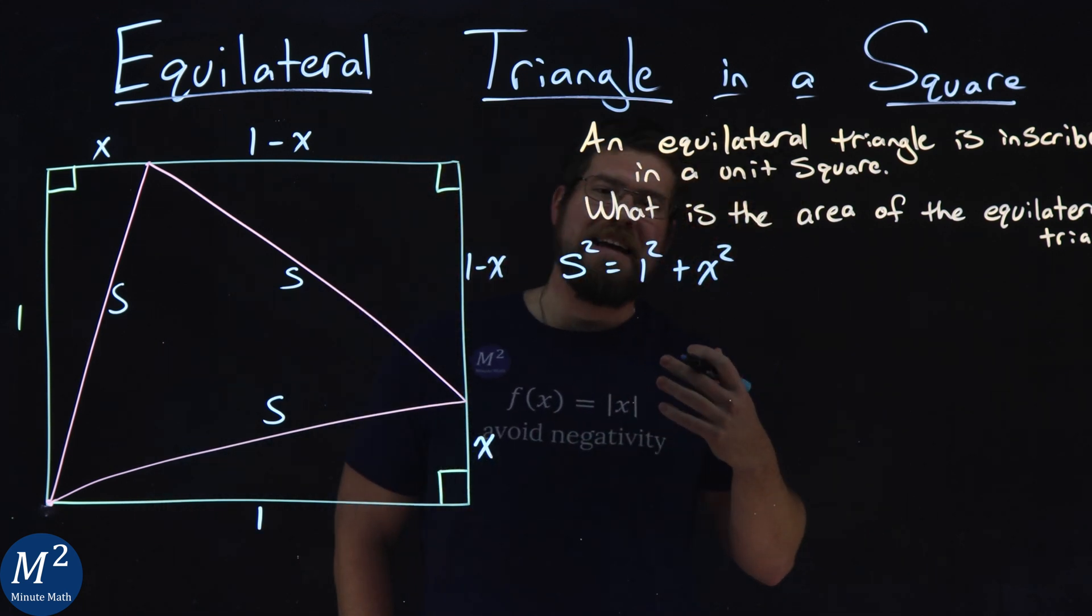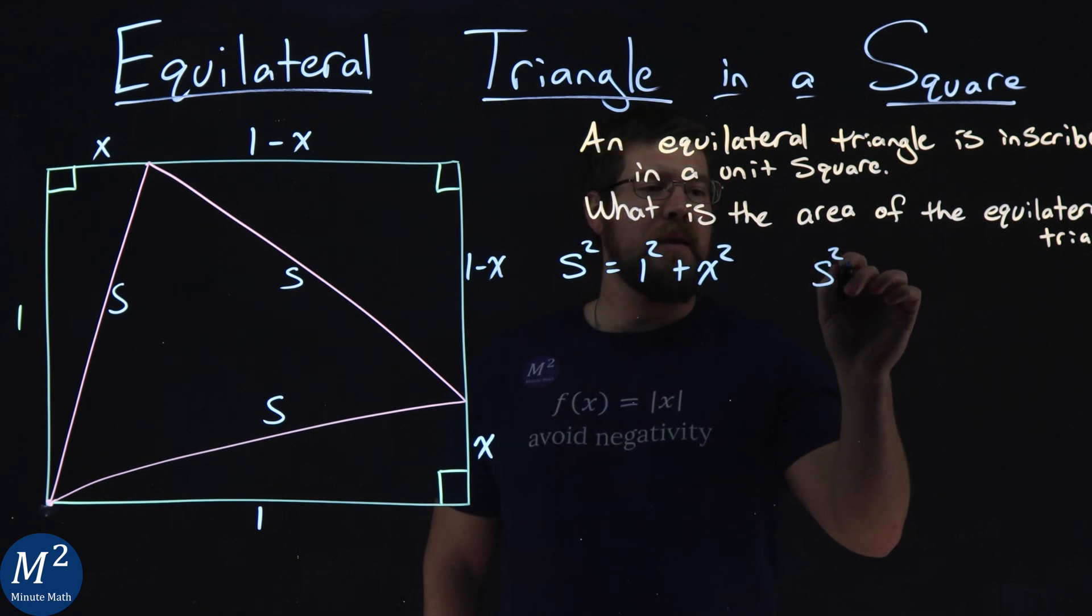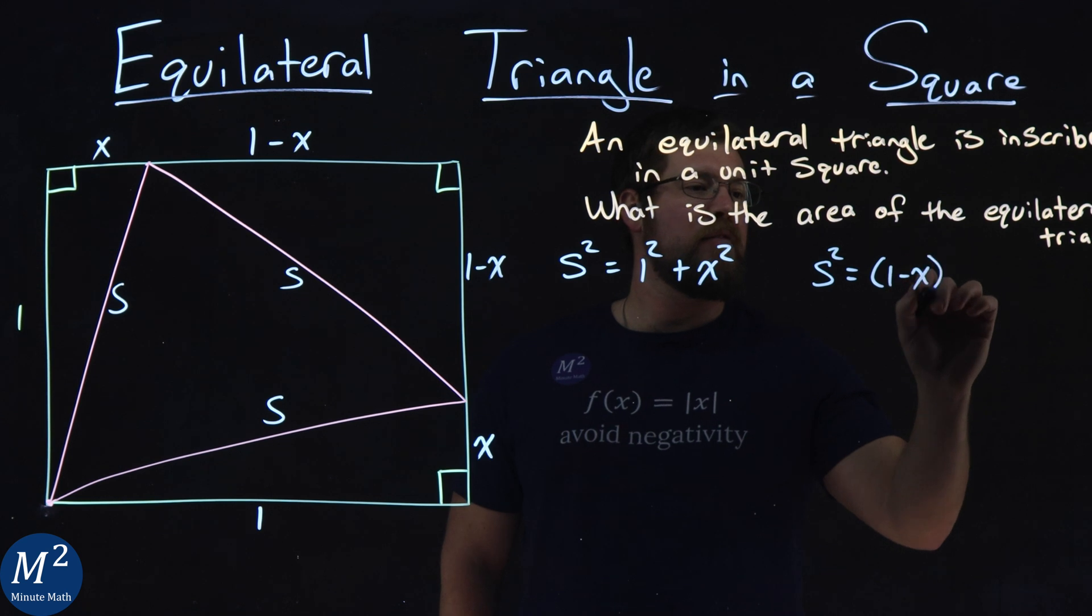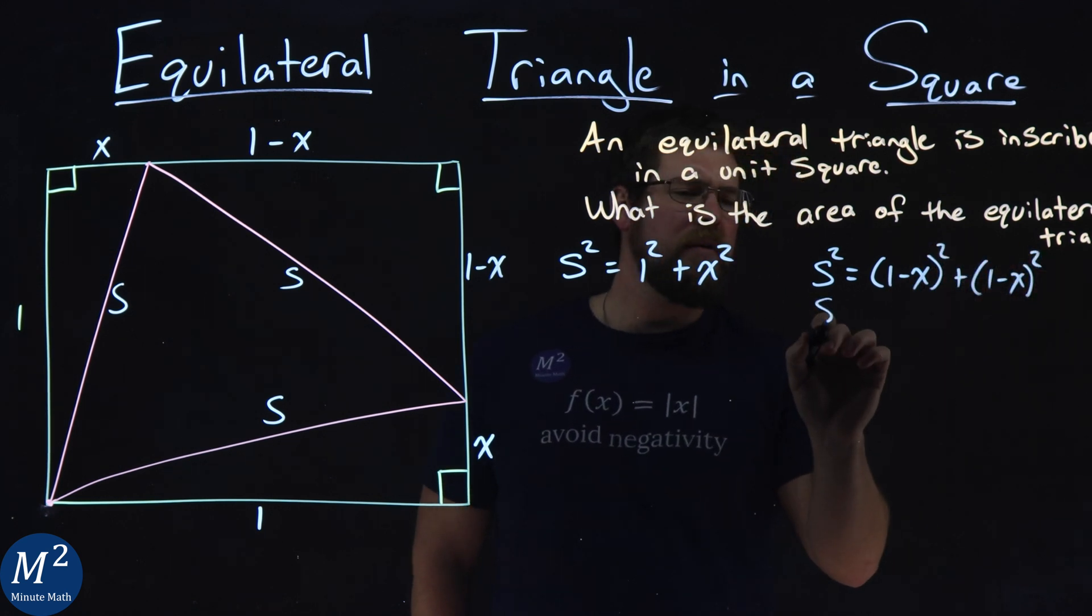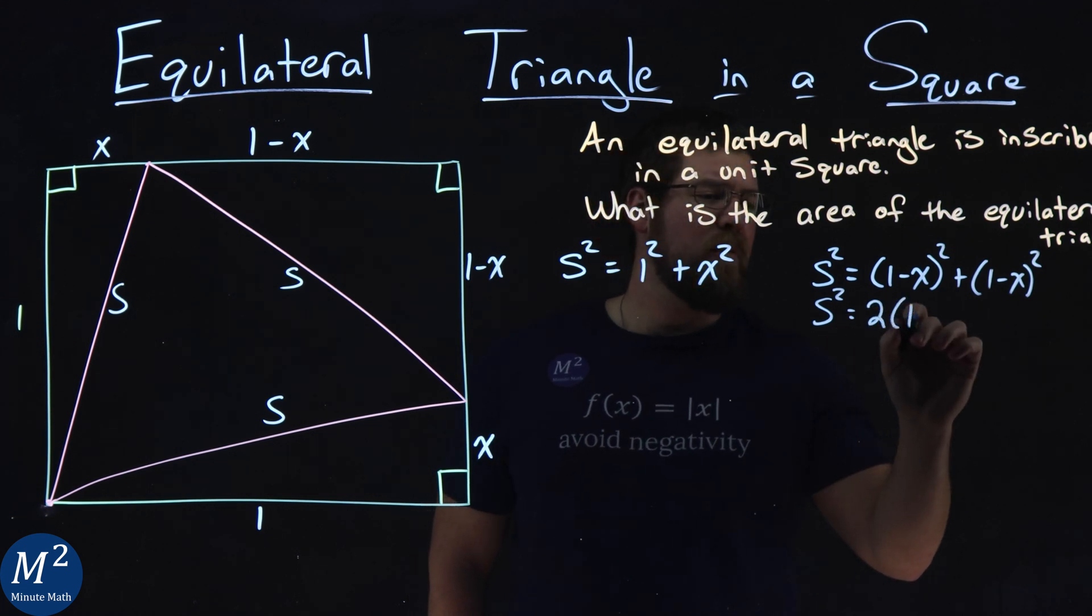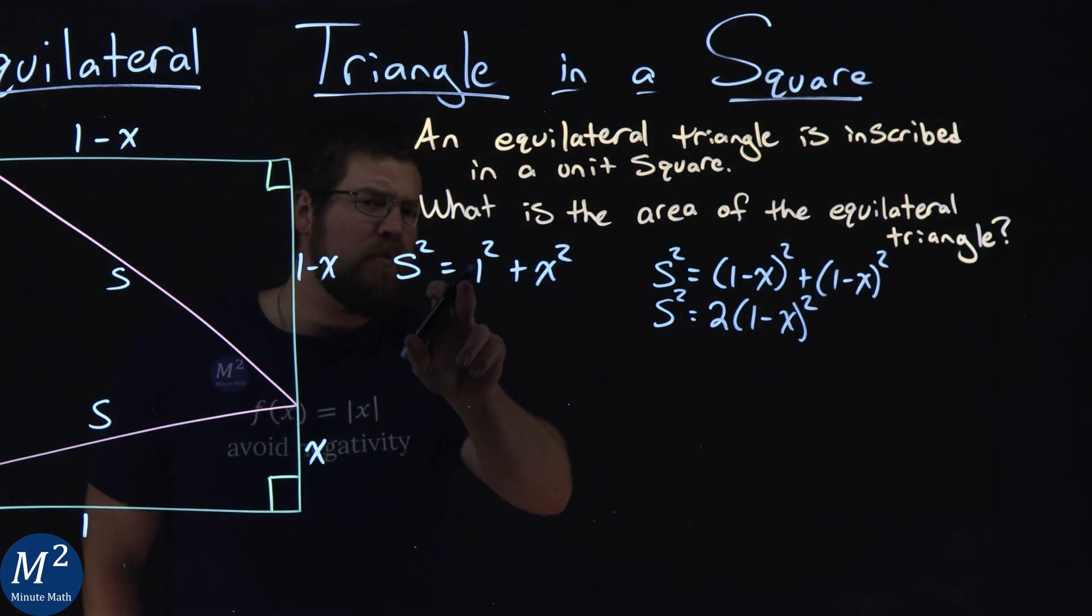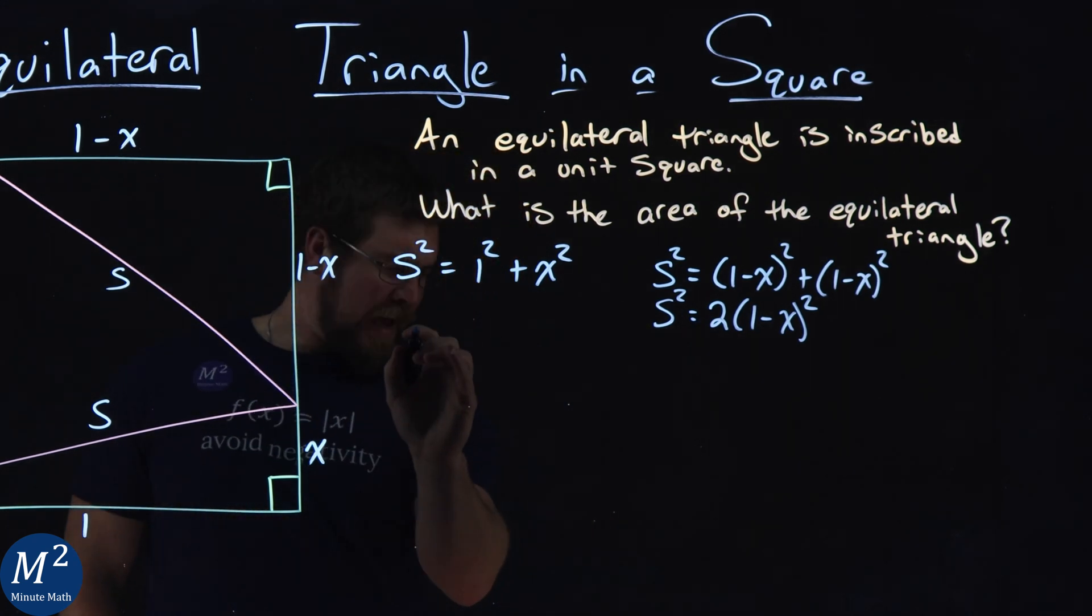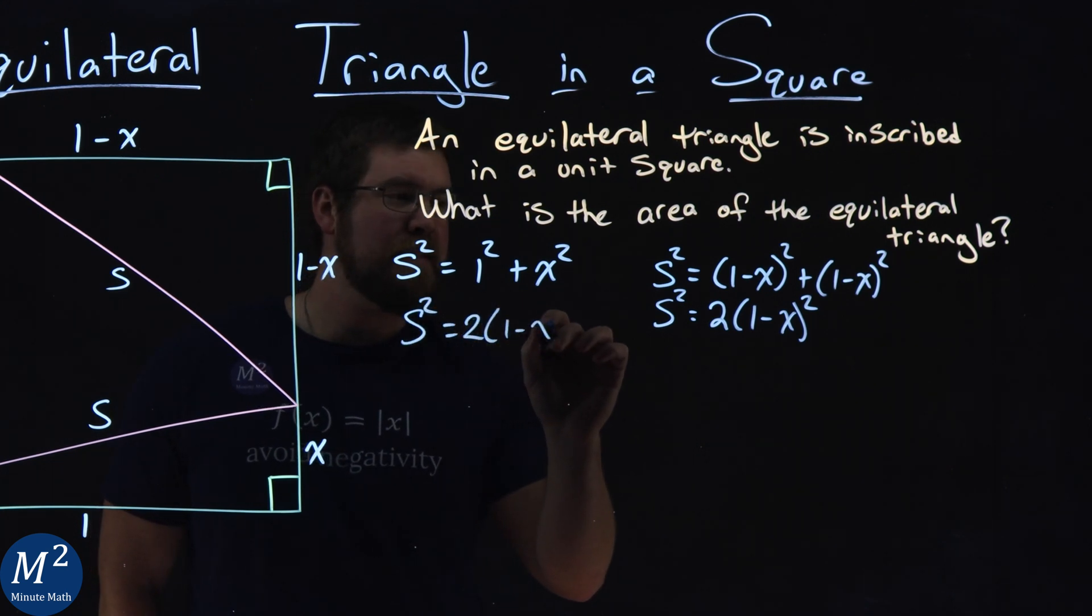So we can use Pythagorean theorem a second time and say that S squared is equal to (1 minus X) squared plus (1 minus X) squared, or simplified S squared is equal to 2 times (1 minus X) all squared. So now let's go subtract these two equations from each other.